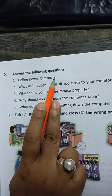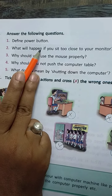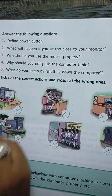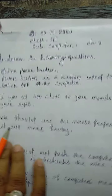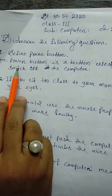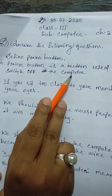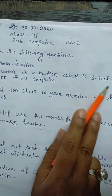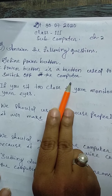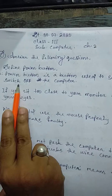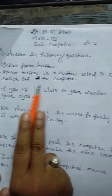The first question is: define power button. What is the power button? Here is the answer: the power button is a button used to switch on or switch off the computer.